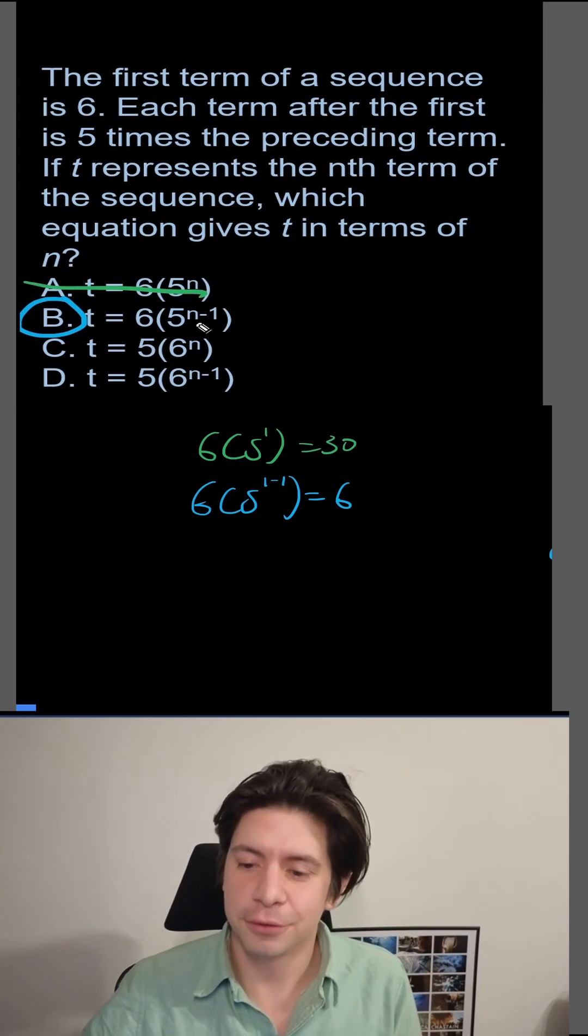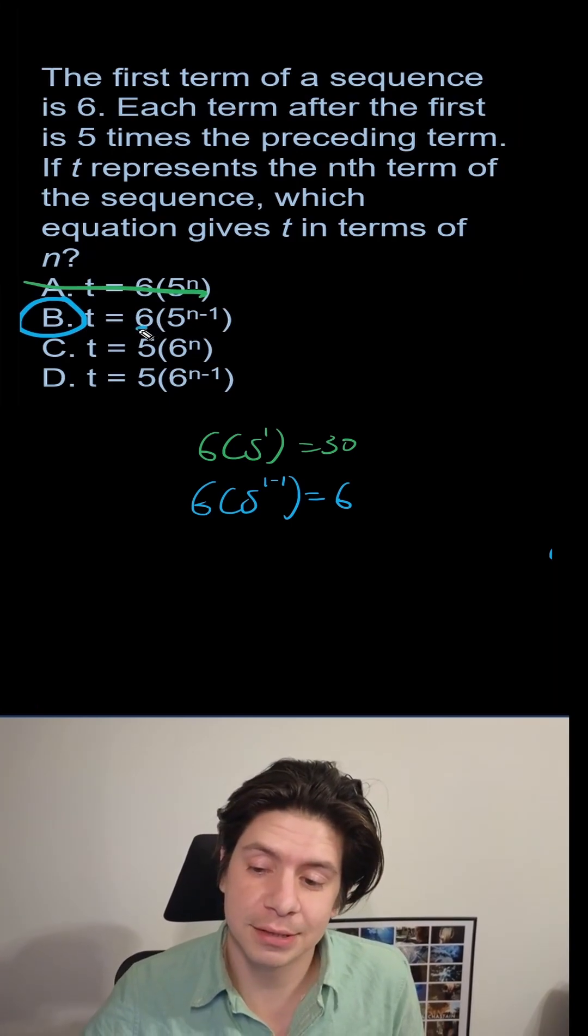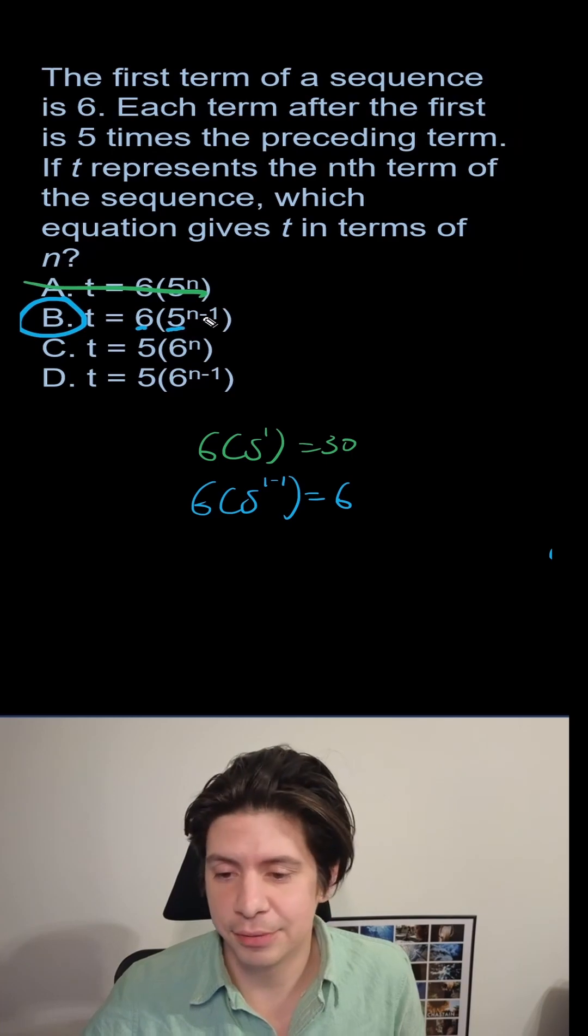And that shows the first term. That's sort of a classic way to set up, right? The first term is on the outside, and the base you're multiplying by is what's taken to the power.